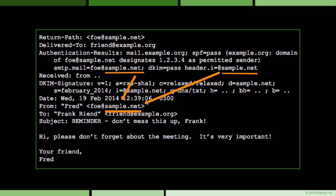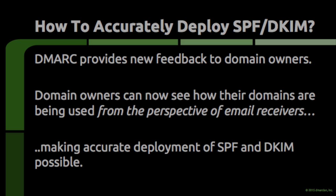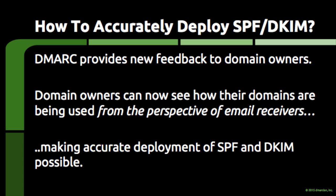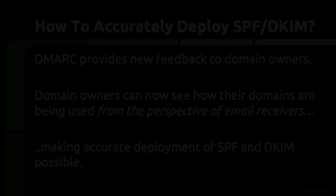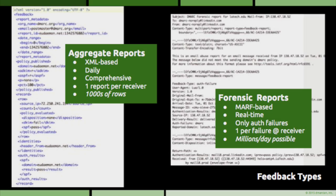Getting identifiers to align ends up being a large part of the work of deploying DMARC. To make it possible for someone that owns an email domain to accurately deploy SPF and DKIM, DMARC describes how feedback can be sent to the domain owner regarding how their email domain is being used across the internet. This feedback can come in two forms: reports that provide a comprehensive view of all of a domain's traffic, as seen by the organization that generates the report.